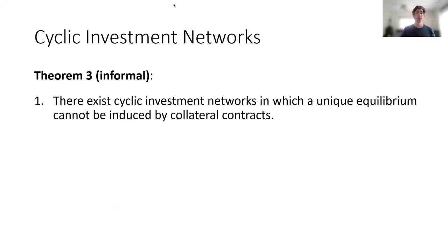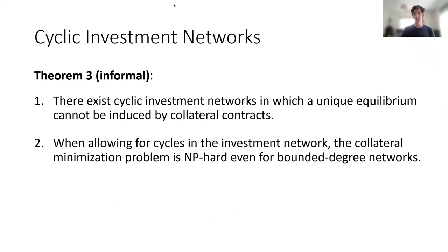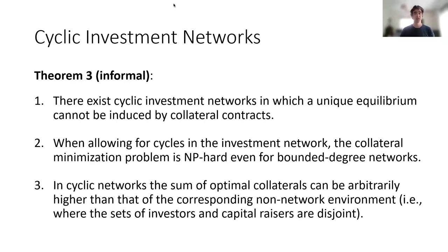For networks with cycles, things are different. First, there exist investment networks where a unique equilibrium cannot be induced by collateral contracts even if full collaterals are given to all investors. Second, when cycles are present, the collateral minimization problem becomes NP-hard even for bounded-degree networks. Third, even in cyclic networks where a solution exists, the total collateral in an optimal scheme may be arbitrarily higher than in the corresponding non-network environment where investors and capital-raisers are disjoint sets.